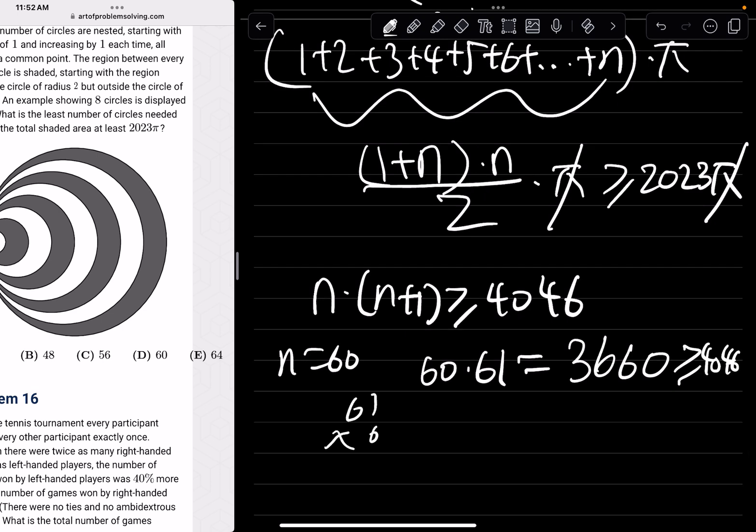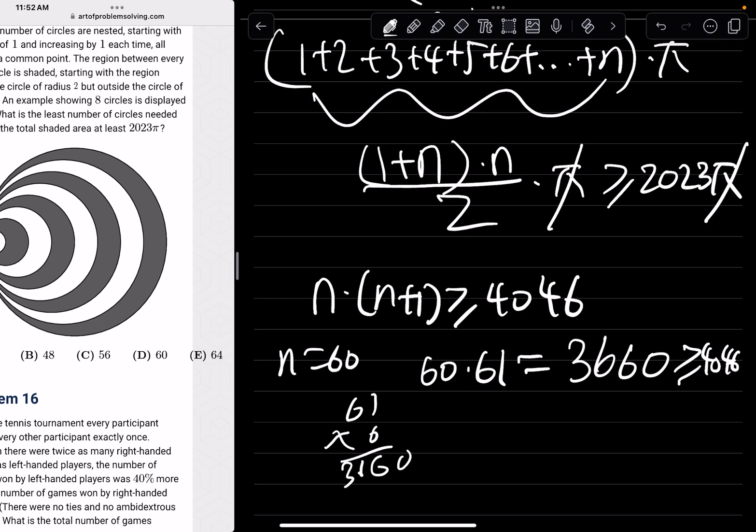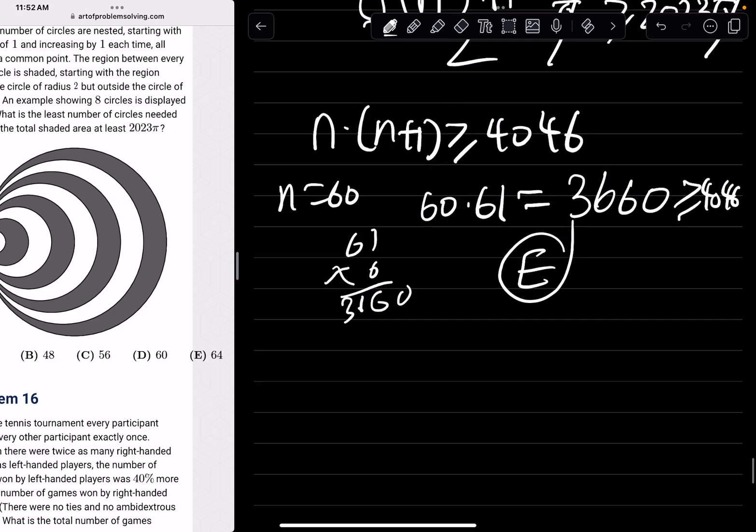So 61 times 6. So we see that answer choice E has to be the only one that works. And if we do 64 times 65, you will indeed see that this is going to be greater than 4046. So answer choice E.